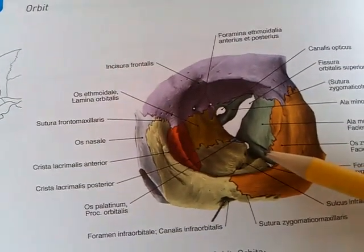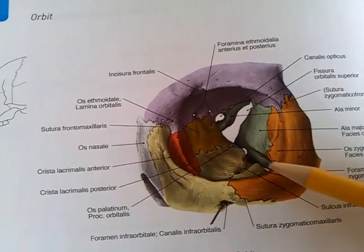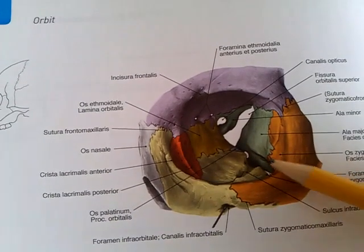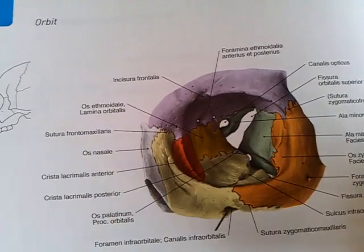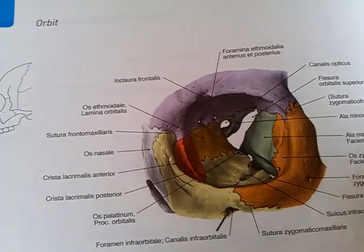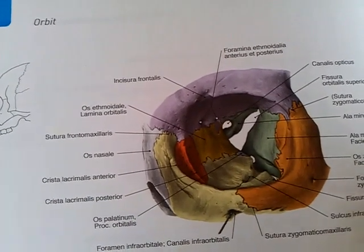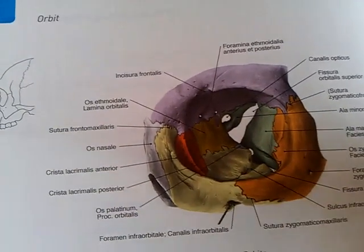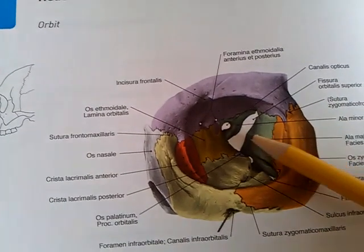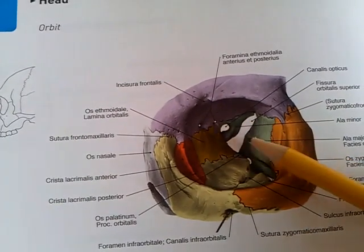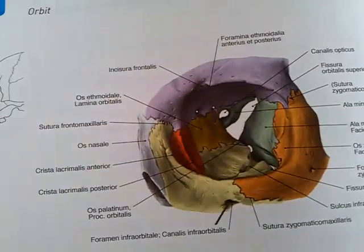And then you have the inferior orbital fissure. Its borders are the greater wings of sphenoid and the maxilla, and it transmits the infraorbital nerve and the inferior ophthalmic vein. The borders of the superior orbital fissure are the greater and lesser wings of the sphenoid bone.